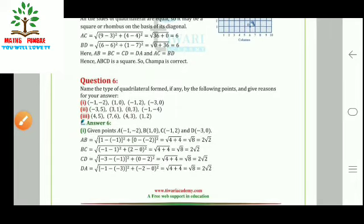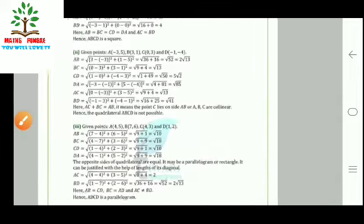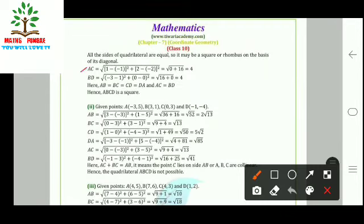Question 6: Name the type of quadrilateral formed by the given points. For part (i), treating the points as A, B, C, D and using the distance formula, we get AB = BC = CD = DA = 2√2, so all four sides are equal. Finding the diagonals AC and BD, both are also equal. Since all four sides are equal and the diagonals are equal, the quadrilateral is a square.